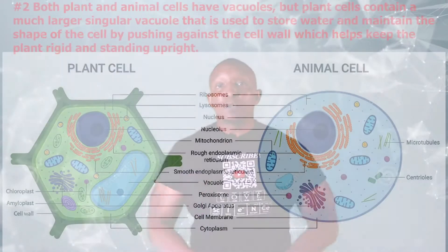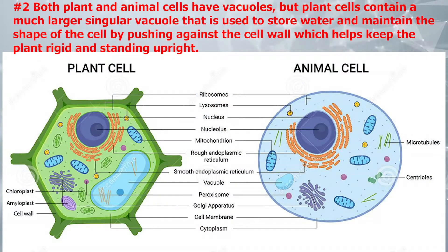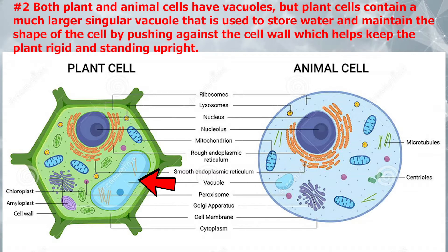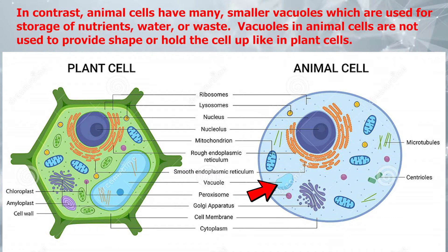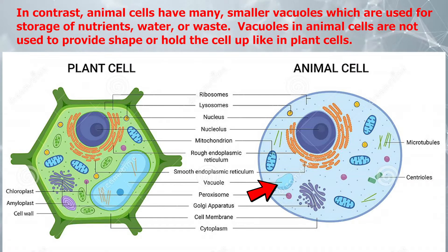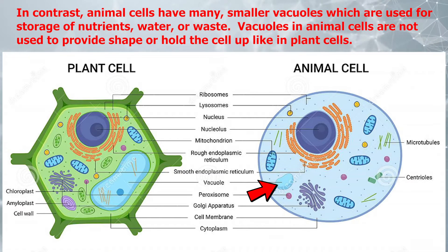Number two: both plant and animal cells have vacuoles, but plant cells contain a much larger, singular vacuole that is used to store water and maintain the shape of the cell by pushing against the cell wall, which helps keep the plant rigid and standing upright. In contrast, animal cells have many smaller vacuoles, which are used for storage of nutrients, water, or waste. Vacuoles in animal cells are not used to provide shape or hold the cell up like in plant cells.